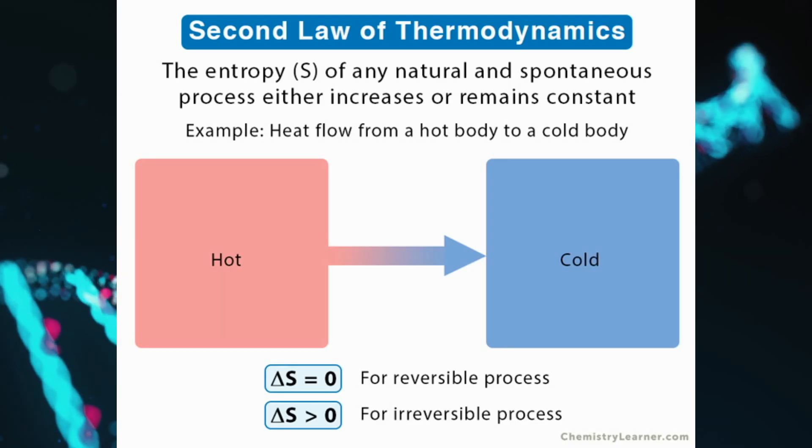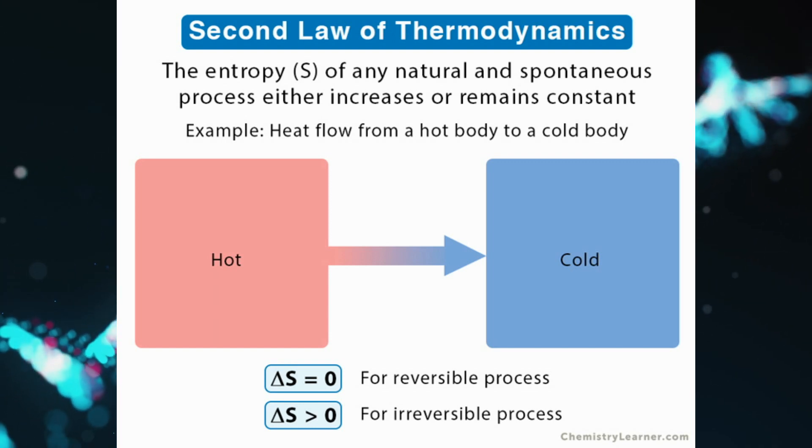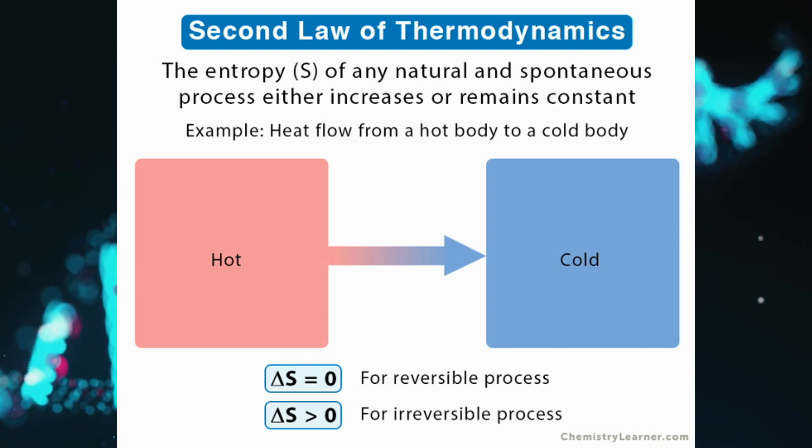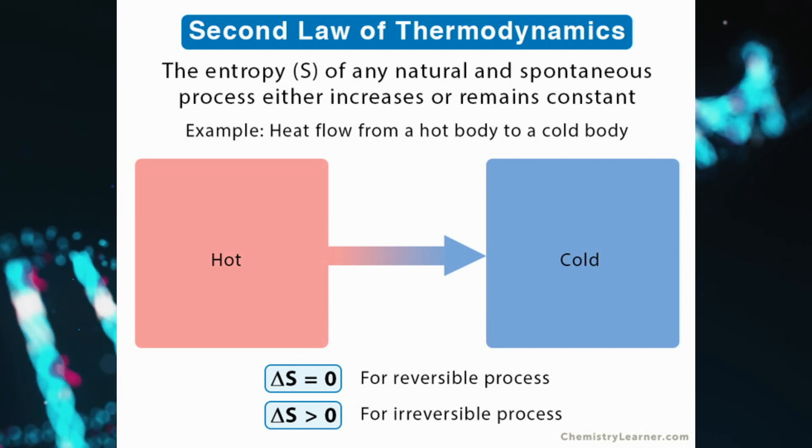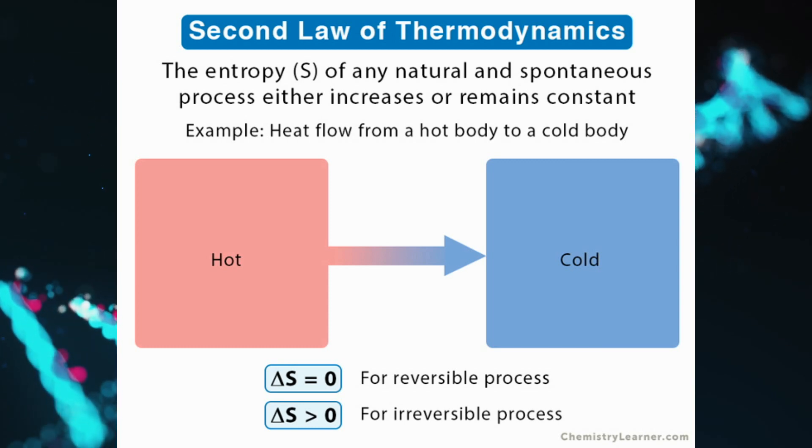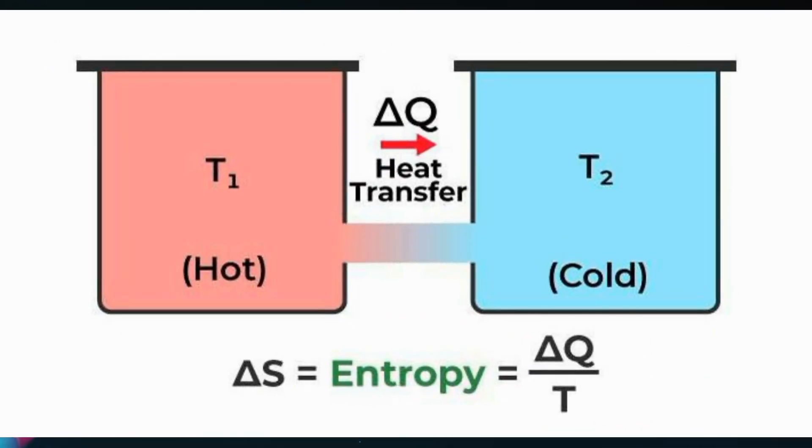The second law of thermodynamics states that the entropy or disorder of a closed system tends to increase over time. The total entropy of a system either increases or remains constant in any spontaneous process, it never decreases. An important implication is that heat transfers energy spontaneously from higher to lower temperature objects, but never spontaneously in the reverse direction. This is because entropy increases for heat transfer of energy from hot to cold.